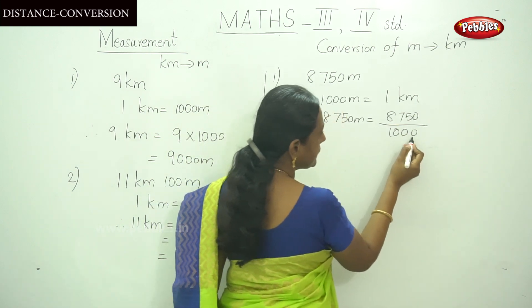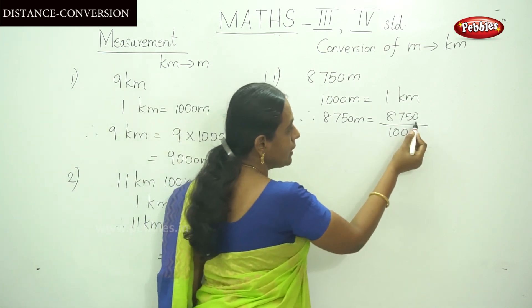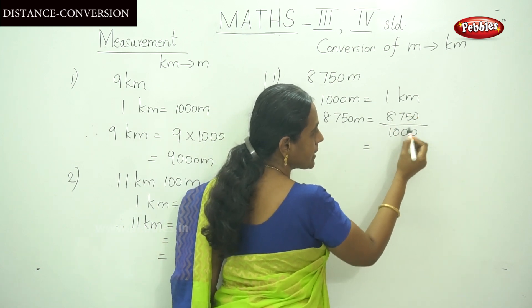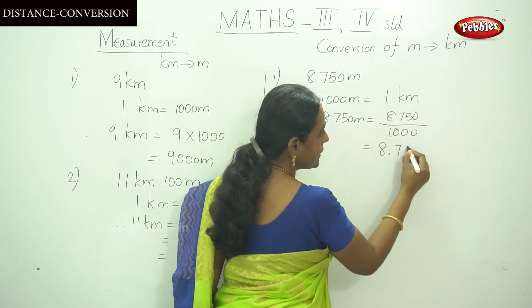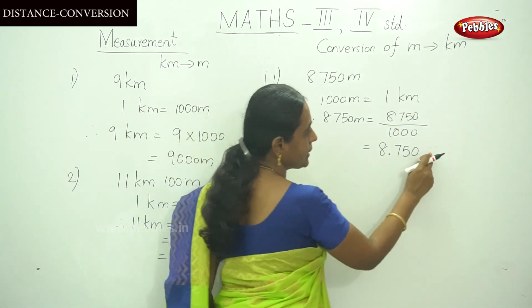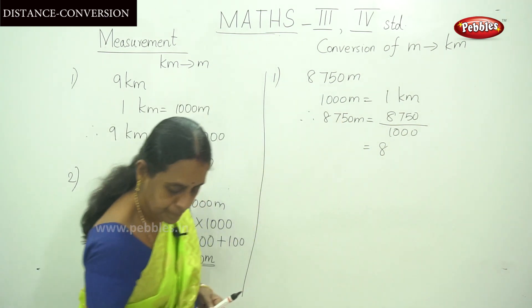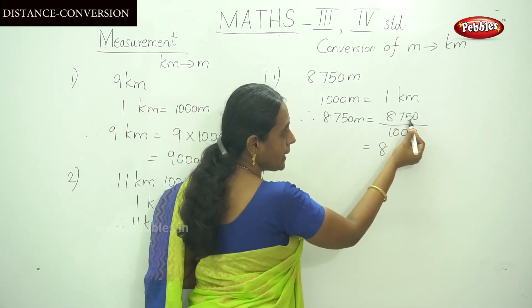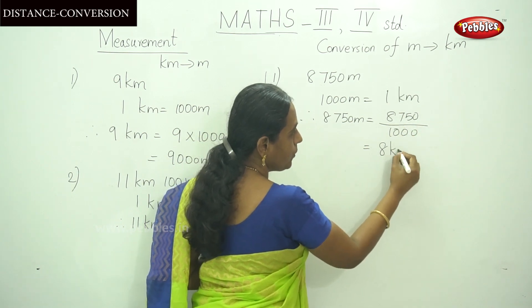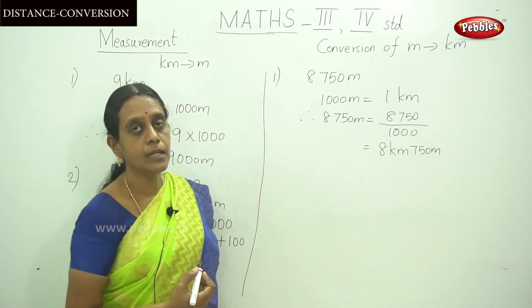To divide by 1000, count 3 places from the right-hand side towards the left and place the decimal point there. So 1 stands for hundreds — put the dot here. That gives 8 kilometers and 750 meters. Dividing by 1000 means making a dot 3 places from the right-hand side. The answer is 8 kilometers and 750 meters. This is the answer by dividing the number.